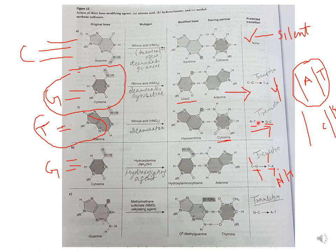The second type of base modifying agent is hydroxylating agents. Hydroxylamine, when added to cytosine, converts it to hydroxyaminocytosine. This hydroxyaminocytosine bonds with adenine instead of guanine. Because of this hydroxylation, in the next round of replication the C-G base pair is replaced with T-A — an example of transition mutation.